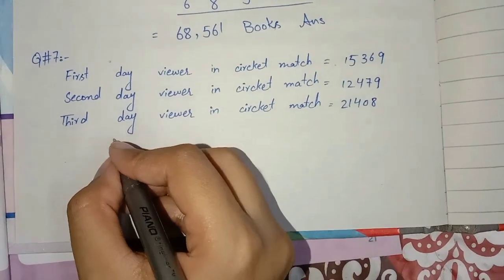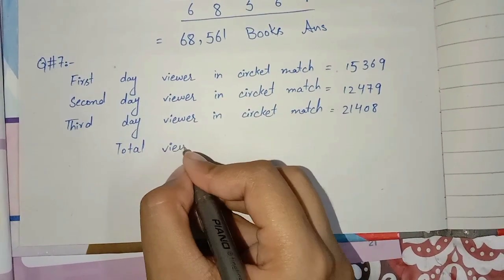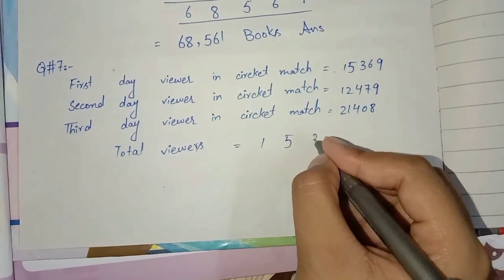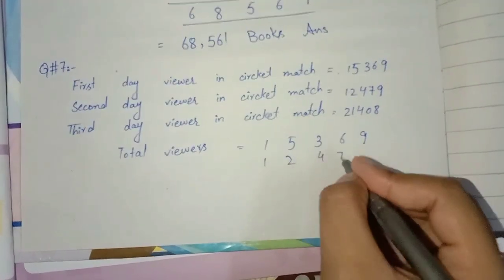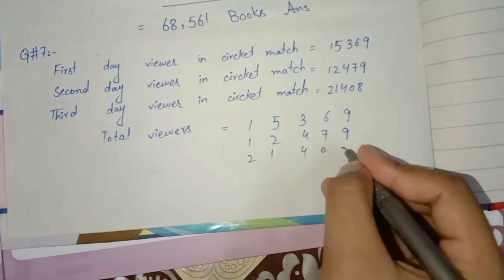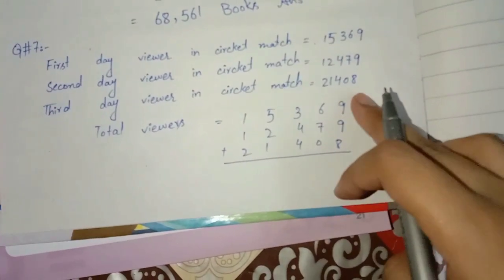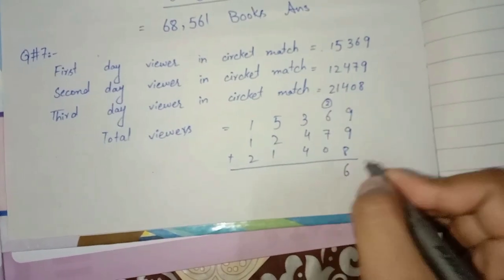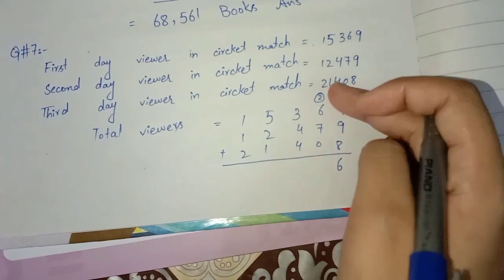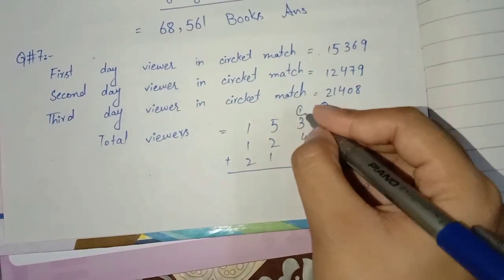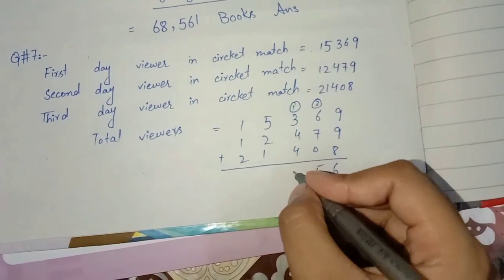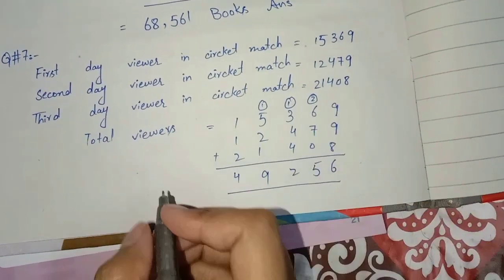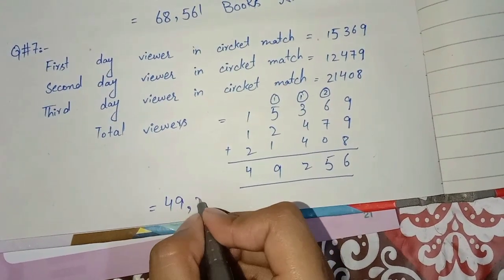Ab hum dekhenge total kitne hain. Total viewers kitne hain? Hum in sab ko add kar lenge: 15,369 plus 12,479 plus 21,408. Plus karne par — total viewers bane 49,256.